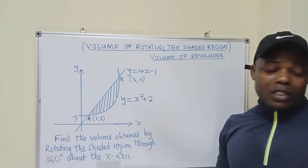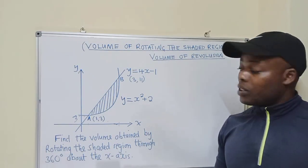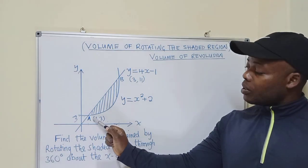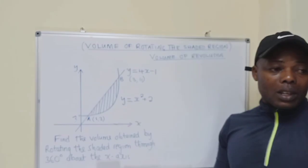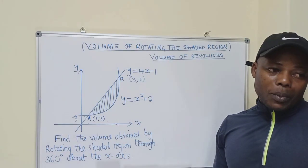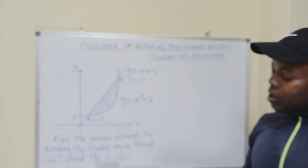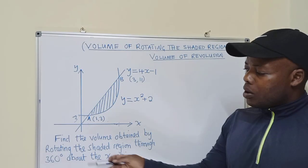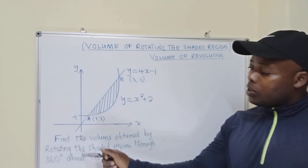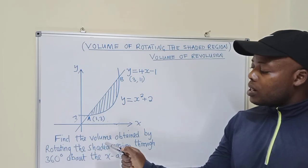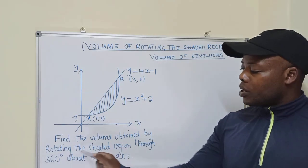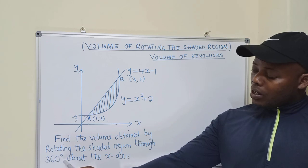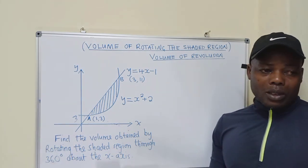So if you followed along in the previous video, we managed to find the coordinates of point A and point B. Now in this video, we'll try to answer this question. The question reads: find the volume obtained by rotating the shaded region through 360 degrees about the x-axis.